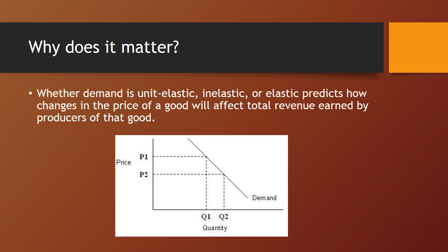If the price were to go from P2 to P1 — an increase in price — we know that according to the law of demand, quantity demanded decreases, going from Q2 to Q1. But depending on whether demand is elastic, inelastic, or unit elastic, that will affect exactly what happens to total revenue in that situation.